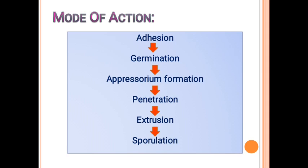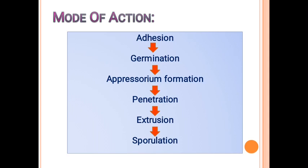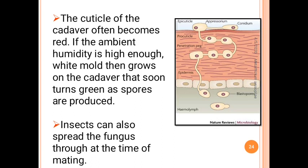Mode of action of Metarhizium: first, adhesion — the fungus comes in contact with the host insect. Then germination of spores produces hyphae, which emerge and penetrate into the insect cuticle. The fungus develops inside; after a few days the whole insect is covered with fungal spores and the host is eventually killed. Metarhizium produces insecticidal peptides called destruxins, and the insect cadaver turns red after infection. The fungus spreads by insects at the time of mating.